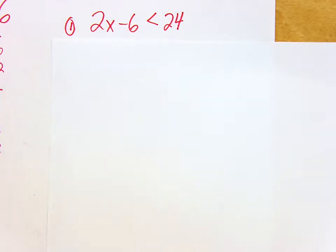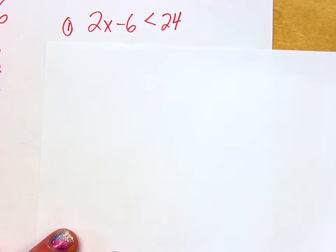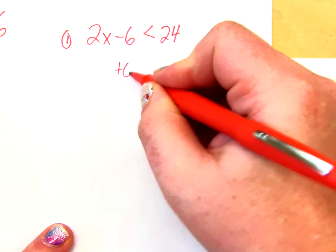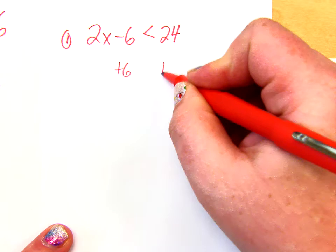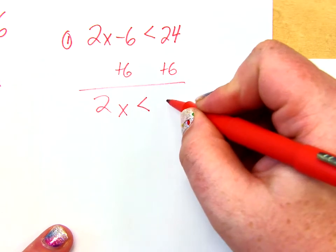Alright guys, so if I'm going to solve this first inequality, Tommy, what's the first thing I'm doing with this one? Yeah, I'm going to add 6 to both sides, just like I normally would if that was an equal sign. So I get 2x is less than 30.